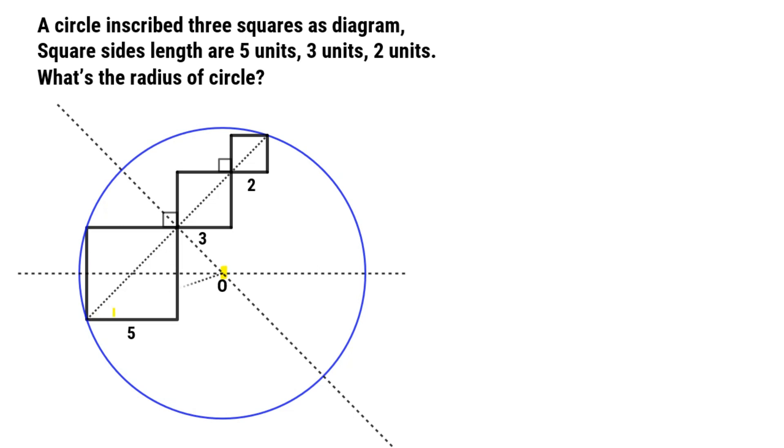Connect center point to this vertex. It's the radius of circle. Let's calculate it. It's the midpoint of square side, so the length of this part is 5 over 2.